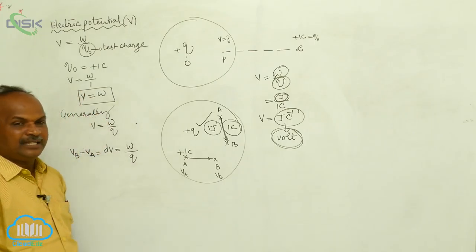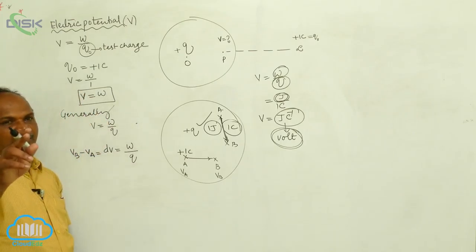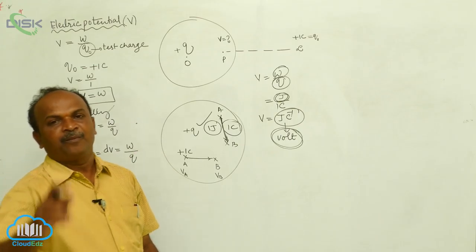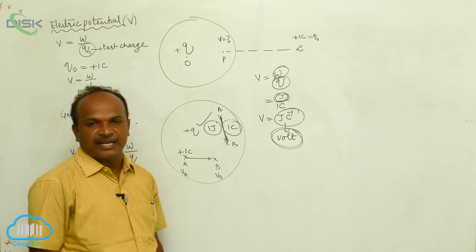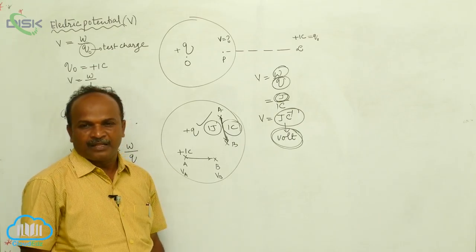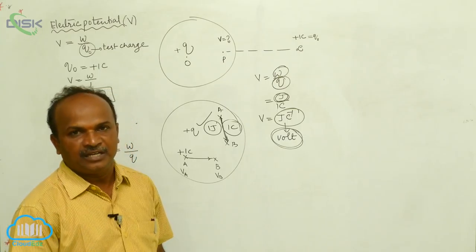Now potential is a scalar quantity. As the potential energy is a scalar quantity, potential is also a scalar quantity. Therefore, here potential, potential difference and potential difference formula, potential difference unit.